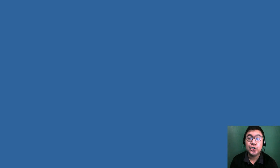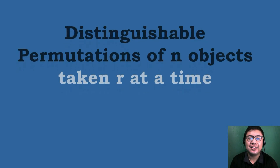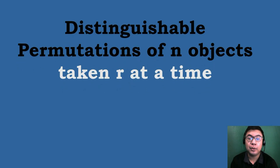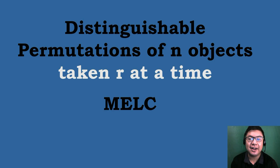Hello guys, what's up? This is SirEJ, and welcome again to another Math Tutorial. In today's topic, we will be discussing the distinguishable permutations of N objects taken R at a time.